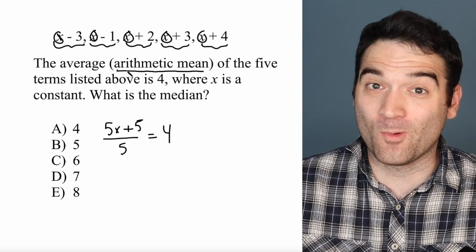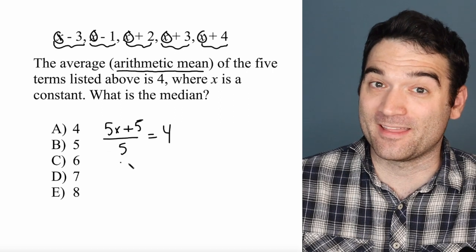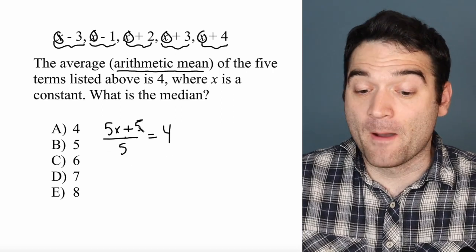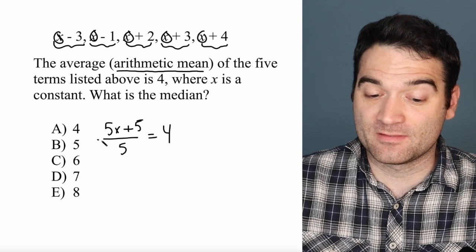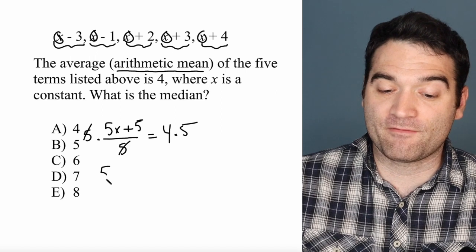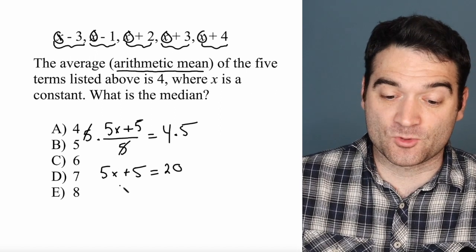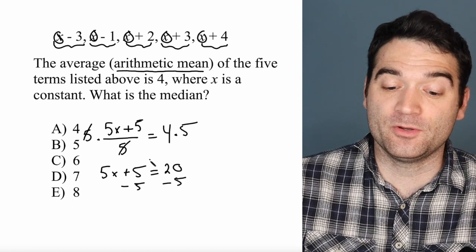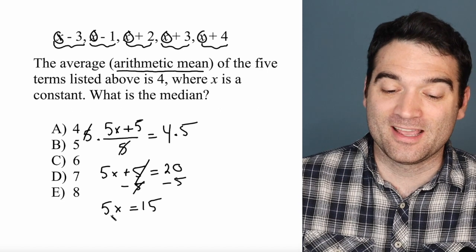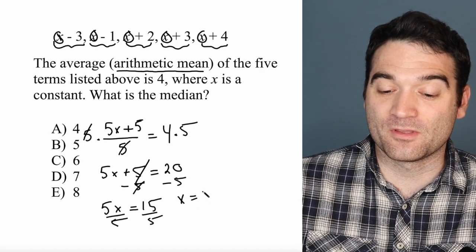I'm just writing what the problem told me: the average of these five terms is 4, so the sum divided by the number of terms equals 4. Let's solve for x. Multiply both sides by 5 to cancel out the denominator, and I get 5x plus 5 is equal to 20. Subtract 5 from both sides, and we get 5x is equal to 15. Divide both sides by 5, and we find that x equals 3.